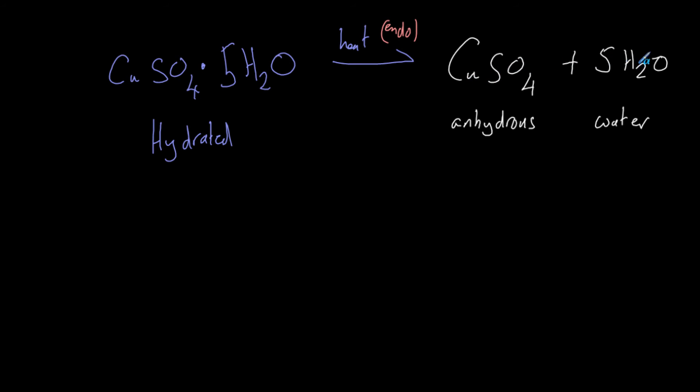Now if we take our anhydrous copper sulfate and we add water to it - so the water here has been given off and it's likely given off as a gas - if we take our anhydrous copper sulfate and we add water to it, we will hydrate the copper sulfate and form hydrated copper sulfate. And so that is the exact opposite of this reaction. So we add water and we get heat given off, so heat being given off means that is exothermic and the temperature will therefore go back up. And so this direction is exothermic.